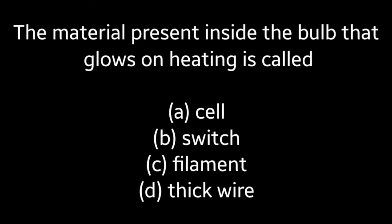Next question: The material present inside the bulb that glows on heating is called (A) Cell, (B) Switch, (C) Filament, (D) Thick Wire. Answer is Option C: Filament.